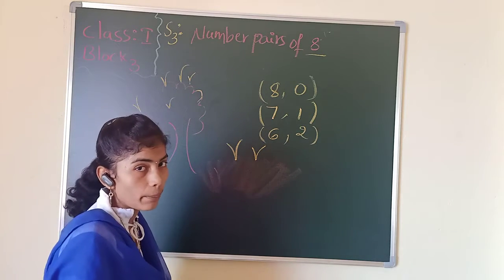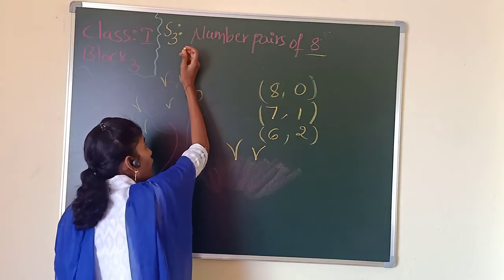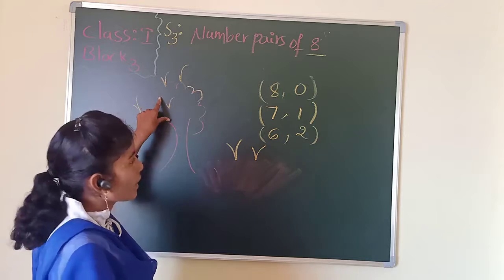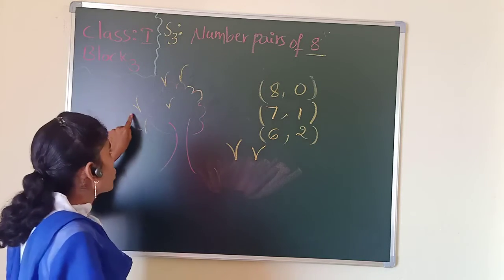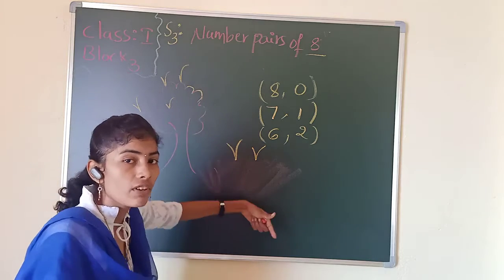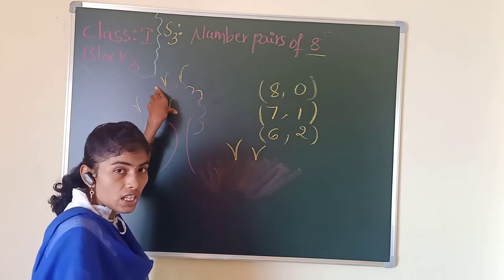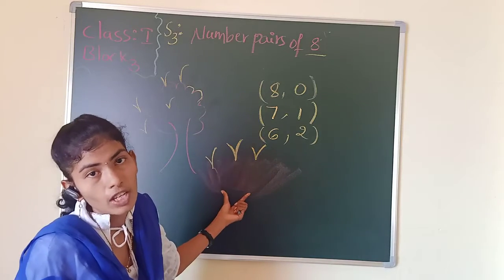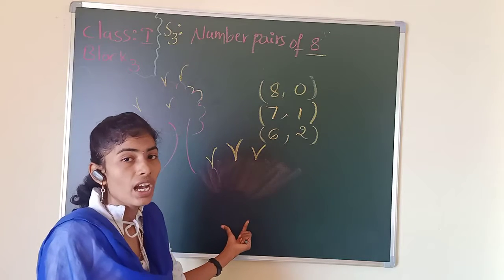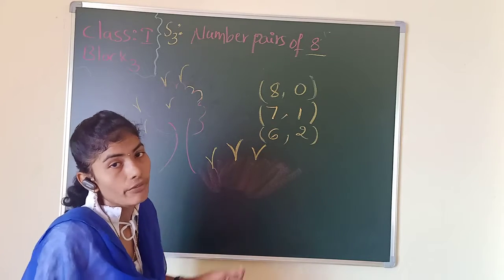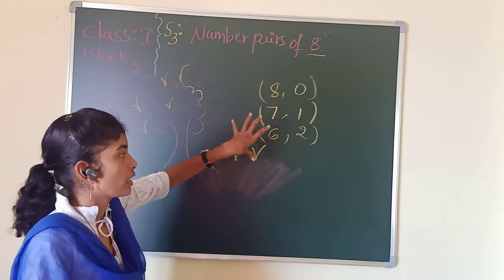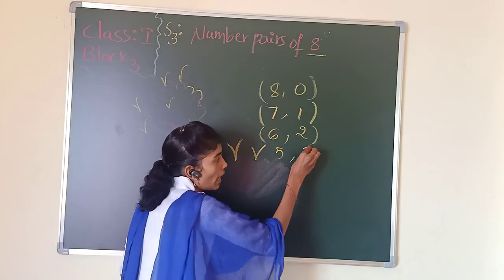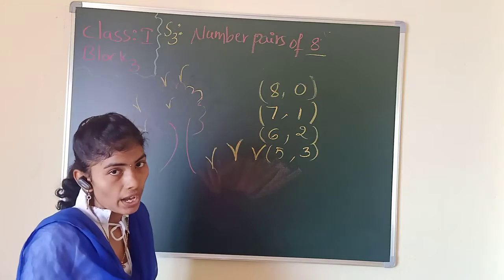Can we write any other different pair? I am removing 1 more monkey. Now count — 1, 2, 3, 4, 5. How many monkeys will be on the grass? Already 5 monkeys on the tree, so 6, 7, 8 — the rest will be on the grass. How many monkeys on the grass now? 3 monkeys. If we have 5 monkeys on the tree, there are 3 monkeys on the grass. So 5 comma 3 is another number pair for 8.